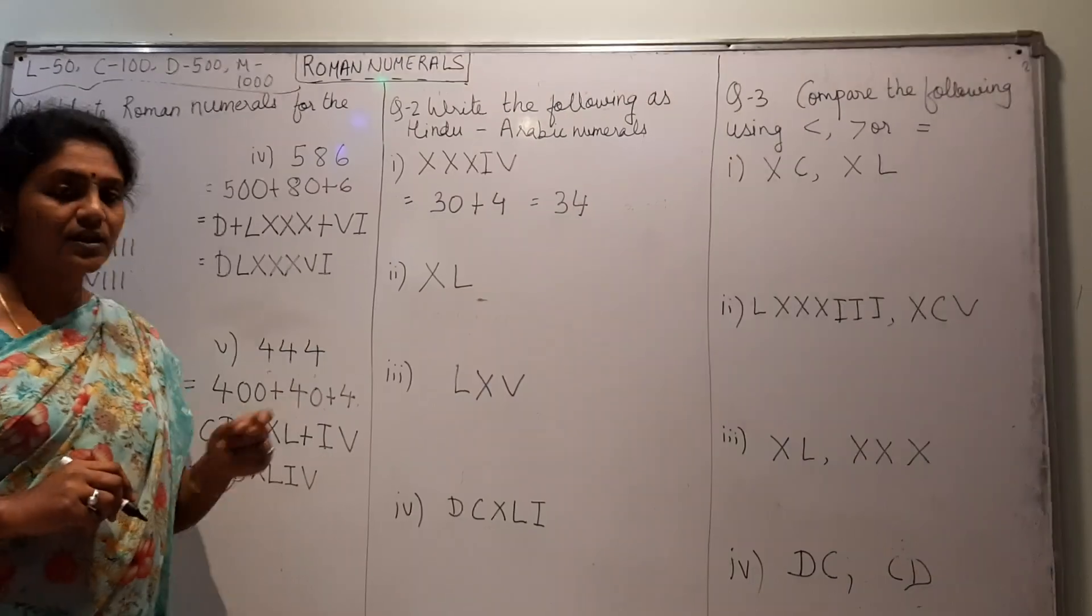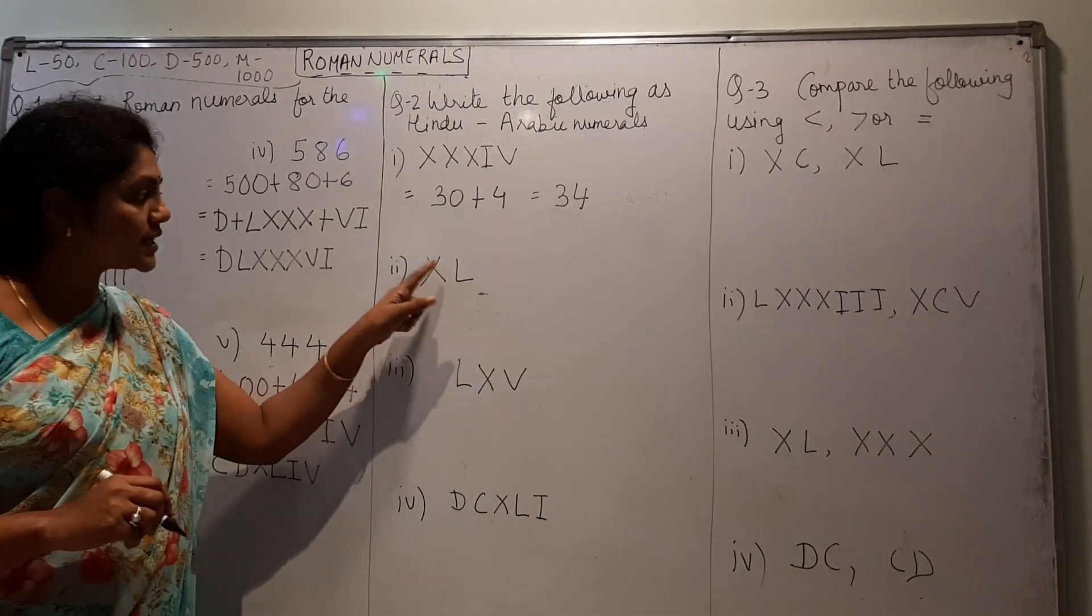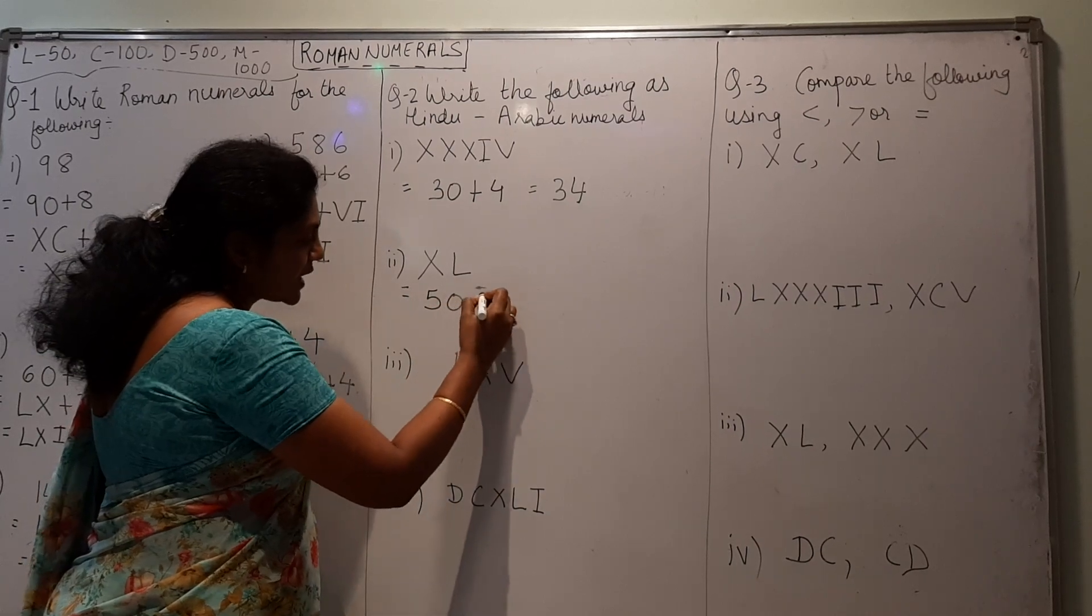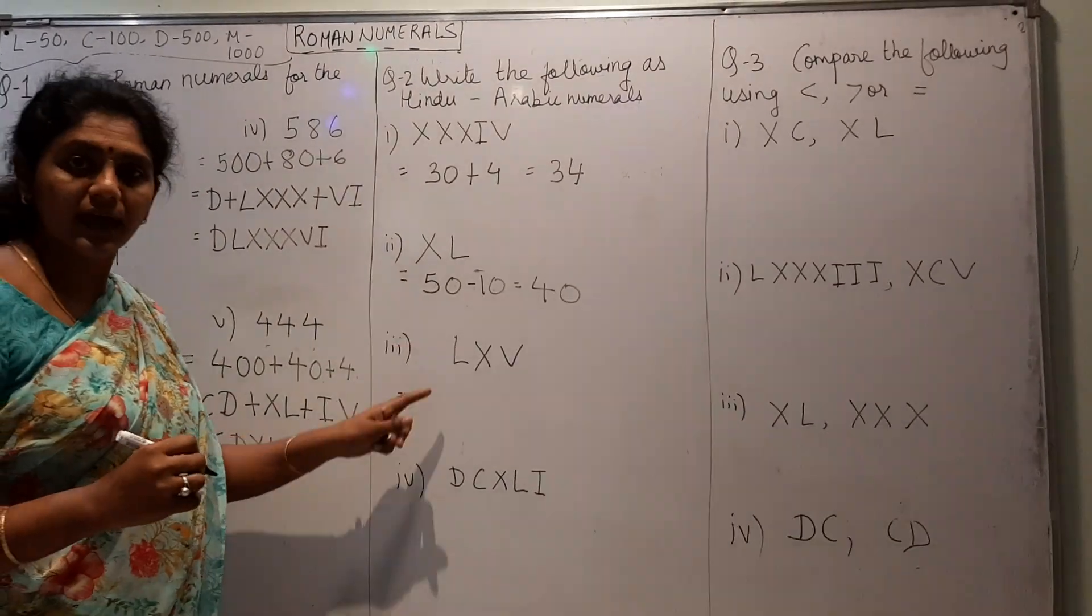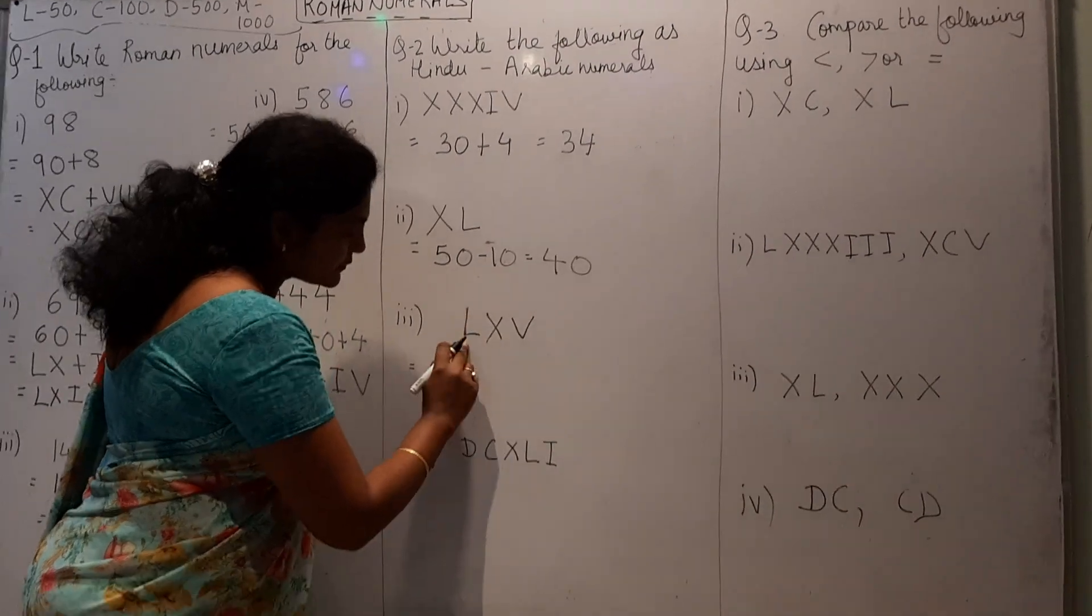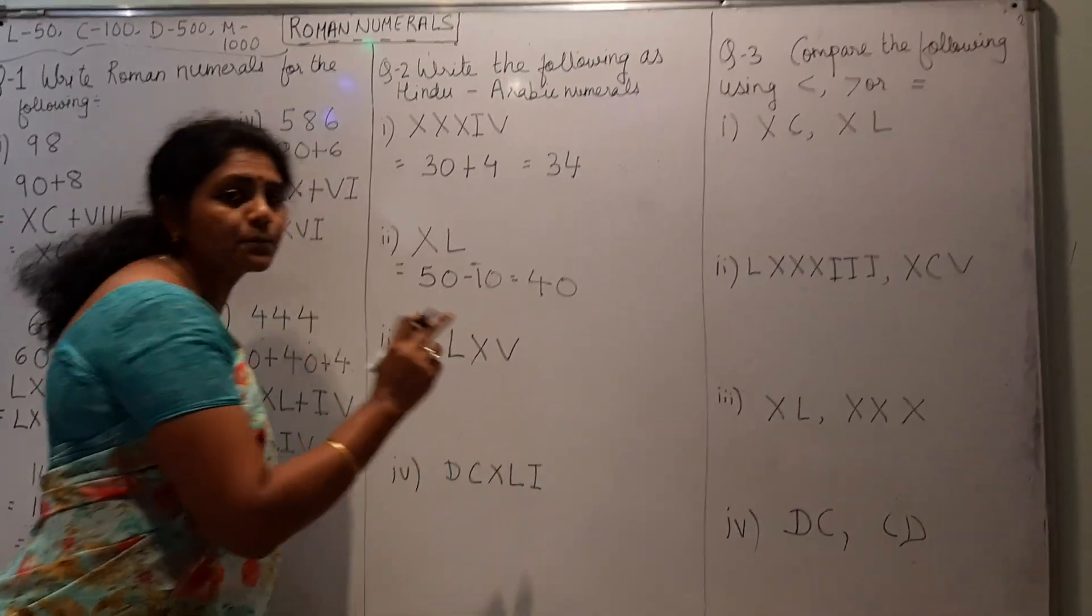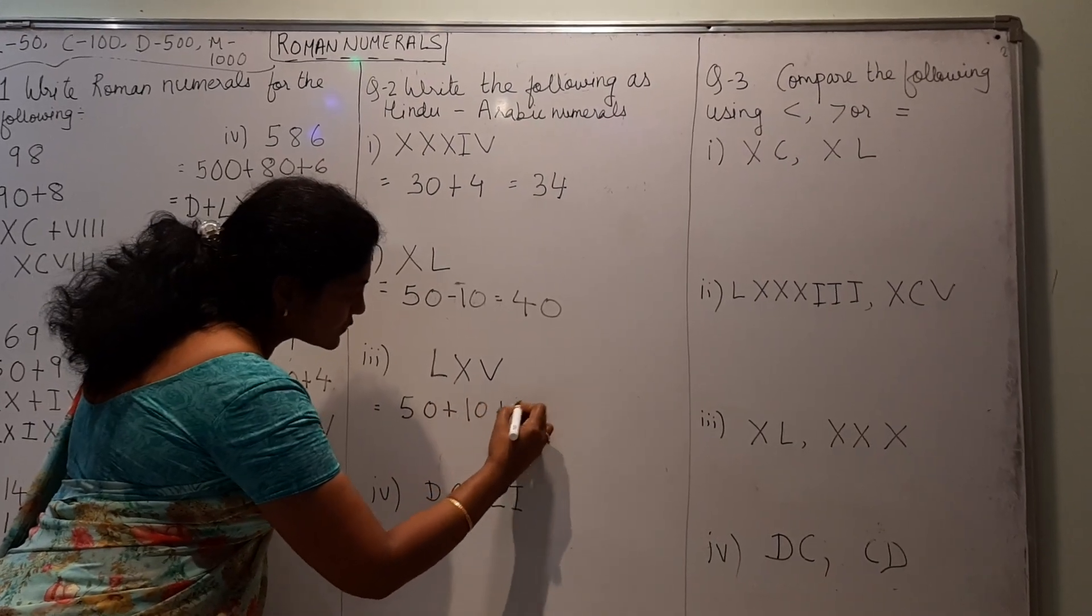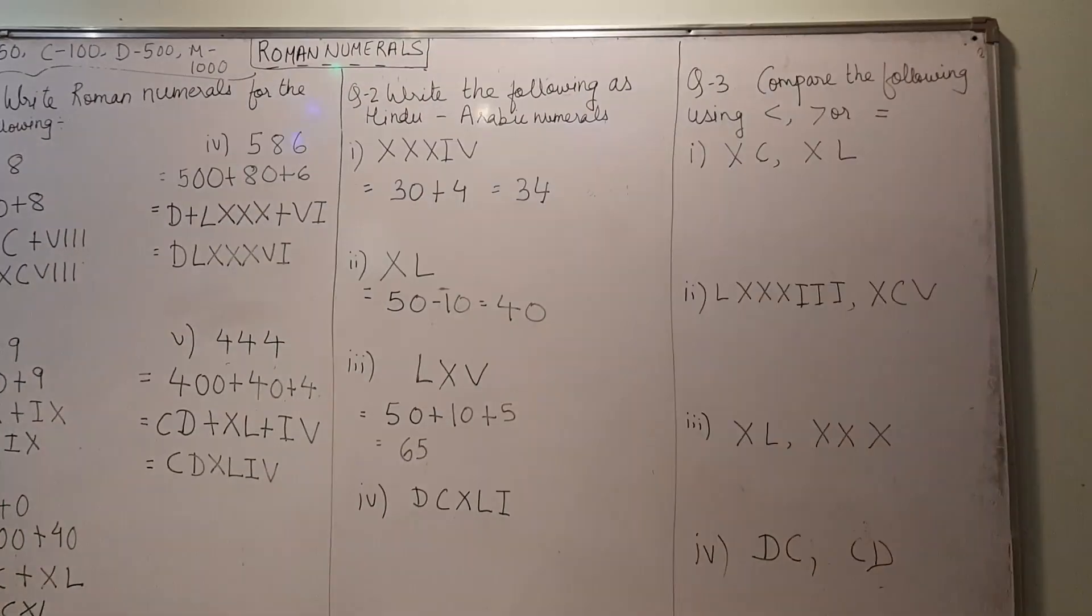Then, XL. I told you, XL. This is 10, this is 50. Where it is written in the left, minus it. So, this will be 50 minus 10, this is 40. Now, LXV. L is, this is L, 50 and this is 10. Now, this is smaller, it is written to the right. Means, you have to add. So, 50 plus 10 plus 5, this will be 65.